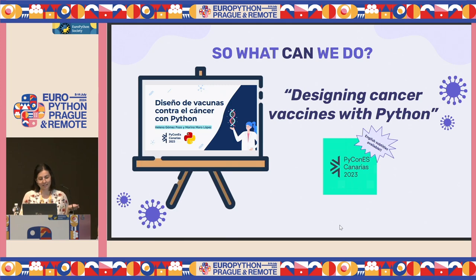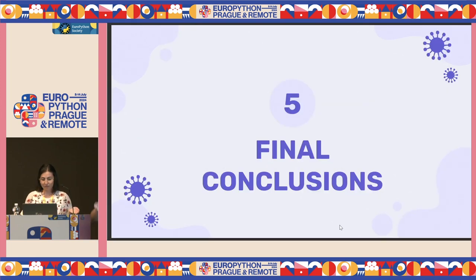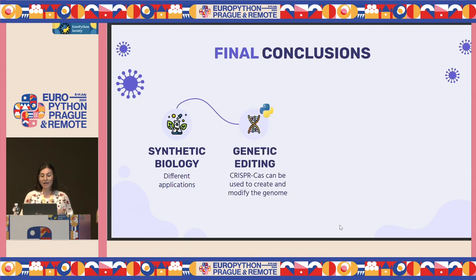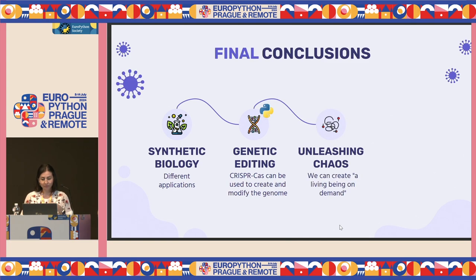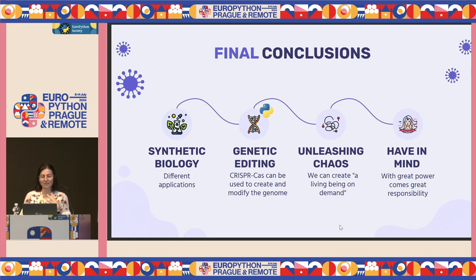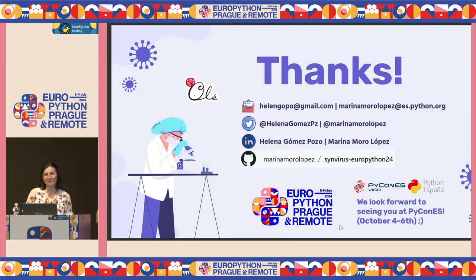The final conclusions, really quickly: synthetic biology can be used as a powerful tool, and one of those tools is gene editing using CRISPR-Cas, which can be done using Python. This has a lot of uses — one of them is that we can create a living being on demand. But we always have to have in mind our responsibility, and legally you can only use this power to do good in the world. So, thank you very much.